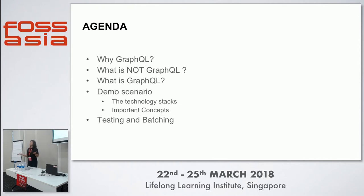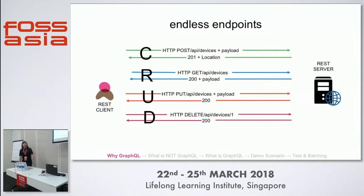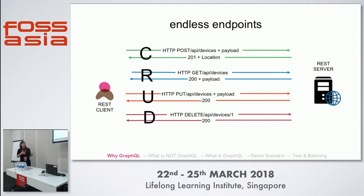As a software developer when we build software, we create communication between our front-end and back-end, and that requires endpoints. Eventually when you try to add features to your applications, it will become unmaintainable because the bigger the application is, the more endpoints you create. For instance, if you have one data source and four different types of endpoints to serve it to your front-end, that's very troublesome for a developer to maintain.